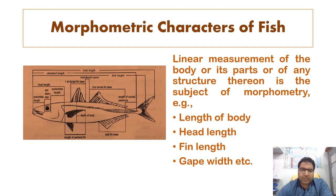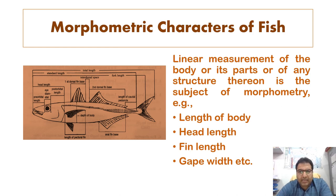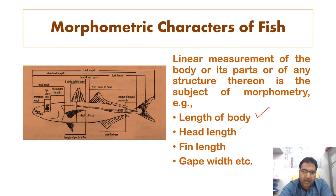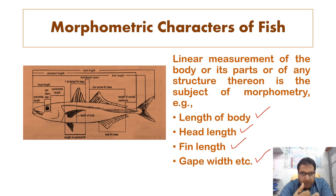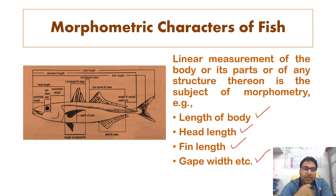Today we shall be talking about the morphometric characters of a fish. When we say morphometric characters, we mean the linear measurement of the body or its parts or any structure thereon — such as the length of the body, head length, fin length, or gape width — all these are morphometric characters of a fish.